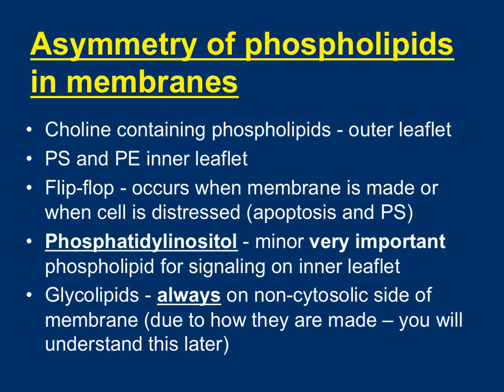We know there's asymmetry of phospholipids, and that flip-flop — the flipping of a phospholipid from one side to another — occurs specifically when cells are undergoing apoptosis. This process sometimes requires energy and sometimes doesn't, depending on whether it's a spontaneous or non-spontaneous reaction. Phosphatidylinositol is going to be important. Glycolipids are lipid structures modified with a sugar, and they are always found on the non-cytosolic side of the membrane.